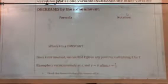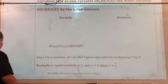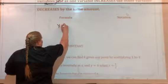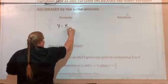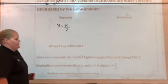The formula for inverse variation is y equals k over x, where k is a constant value.